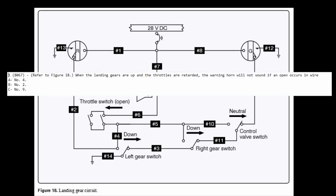The question is: when the landing gears are up and the throttles are retarded, the warning horn will not sound if an open occurs in which wire? Our choices are 4, 2, and 9.